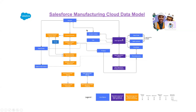The Sales Agreement object is mainly used for run-rate business. It also has a child object called the Sales Agreement Product object, where we can add products related to the sales agreement. Based on a defined period — start date and end date — Manufacturing Cloud will automatically generate a Sales Agreement Product Schedule.